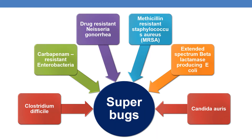Now let us discuss some examples of superbugs. Superbugs are microorganisms which show resistance to a wide range of antibiotics. Some examples are Clostridium difficile, carbapenem-resistant Enterobacteria, drug-resistant Neisseria gonorrhoeae, and methicillin-resistant Staphylococcus aureus — MRSA.